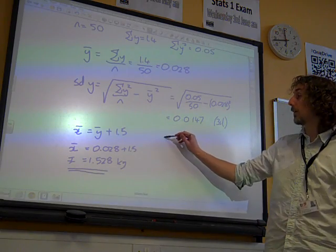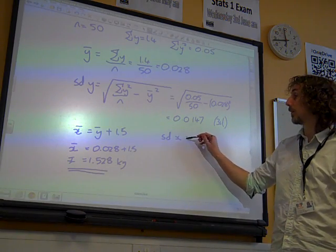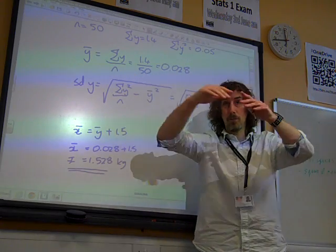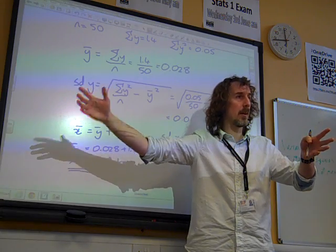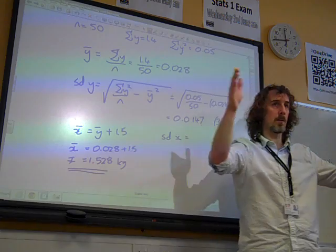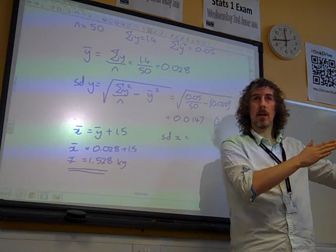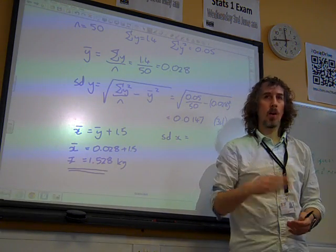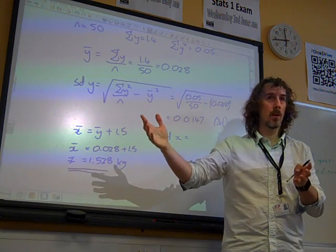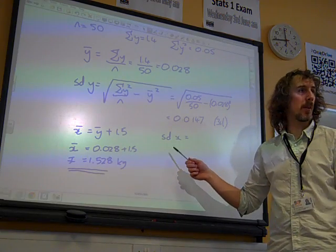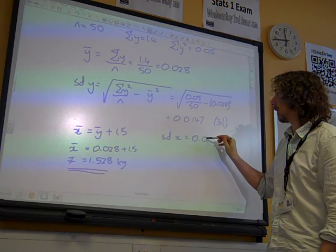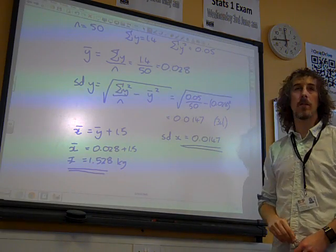And the standard deviation of x, well actually just thinking about this, there we have the original data. Imagine you can see all the individual weights for the bags of flour. We took 1.5 kilograms away from them all, which just shifted the whole lot down the scale. Did it alter the spread of the data at all when we took 1.5 from every value? It didn't, did it? So the standard deviation of our original data is the same as the standard deviation of the coded data. So that's our standard deviation.